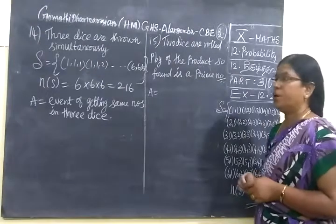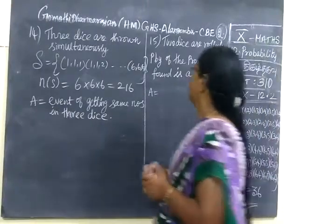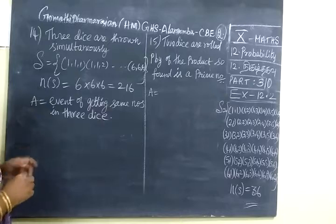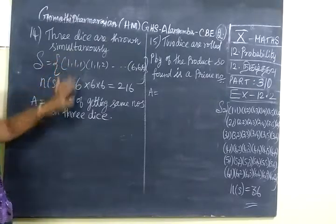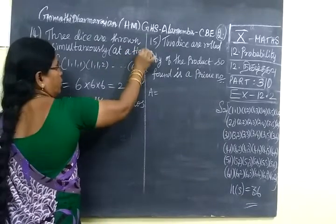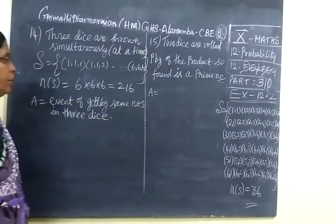So next we see part 310. Three dice are thrown simultaneously. That means at a time, they are throwing 3 dice.